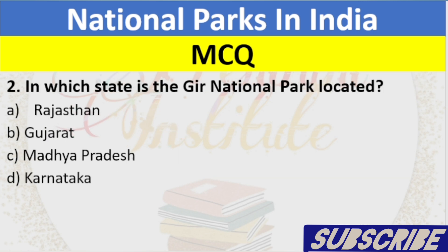Question 2: In which state is the Gir National Park located? A. Rajasthan, B. Gujarat, C. Madhya Pradesh, D. Karnataka. Answer: B. Gujarat.